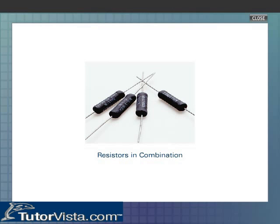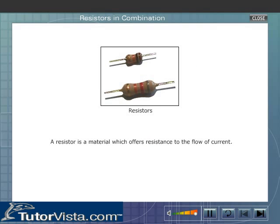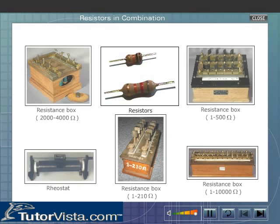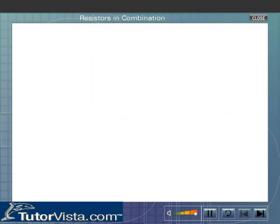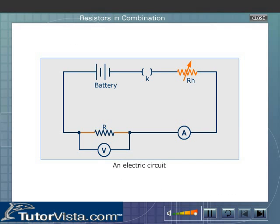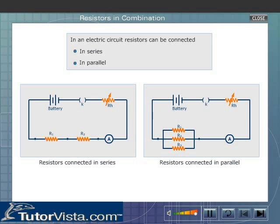Resistors in combination. A resistor is a material which offers resistance to the flow of current. Shown here are several types of resistors. Generally, in an electric circuit, a zigzag line represents a fixed resistor. Two thick dots at the ends represent brass terminals. Resistors can be connected in series or in parallel.